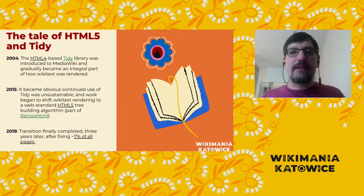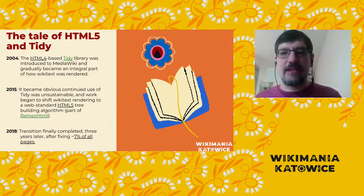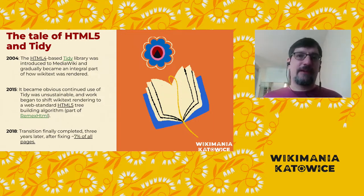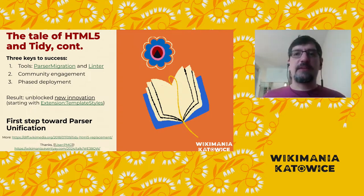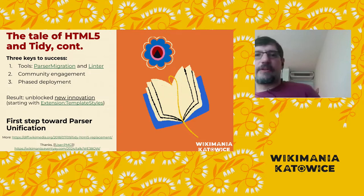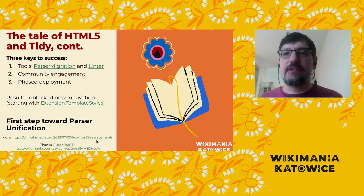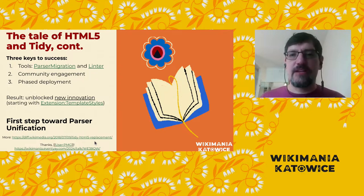Of course, that didn't line up with the idiosyncratic way that Tidy — and thus Wikitext — had always done things, and Tidy had lapsed out of maintenance upstream. Our editors started complaining about ways that Wikitext diverged from the HTML5 spec. This came to a head in 2015, and we began to undertake a transition. Our initial tests in 2016 showed that 93% of pages were unaffected by the shift from HTML4 to HTML5, but that left 7% of all pages on wiki which needed to be fixed up somehow. This process took three years, and we managed it through tools, community engagement, and a phased deployment.